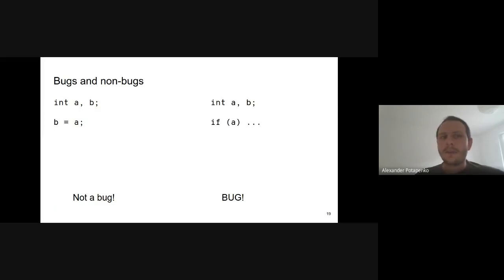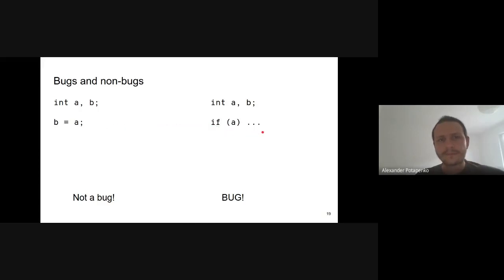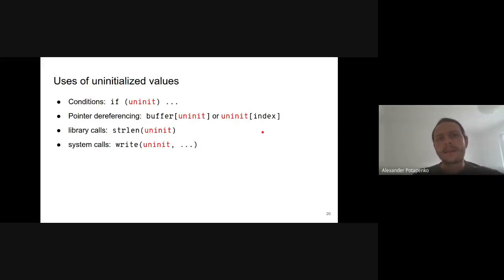People often think MSan reports an error every time an uninitialized value is read from memory — that's not the case. The C standard doesn't forbid copying uninitialized values around, and programs do that all the time. Reporting such cases would be very noisy. Most of the complexity in making MSan work is to only report cases where uninitialized values are actually used — such as in conditions, pointer dereferences, or when passed to standard library functions and system calls. We also need to propagate them through all possible arithmetic operations, memory loads and stores.